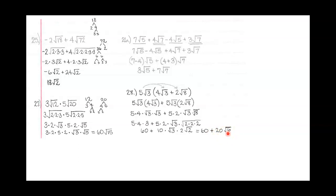Now these are not like terms. Remember, the only way you can add with radicals is if they both have the exact same radical. This would have to be 60 square roots of 6 plus 20 square roots of 6 for me to combine them. It's not, so this is my final answer — I'm not going to combine those any further. You'll also notice that you could have a word problem using the exact same skills we've worked on here in our sample test.